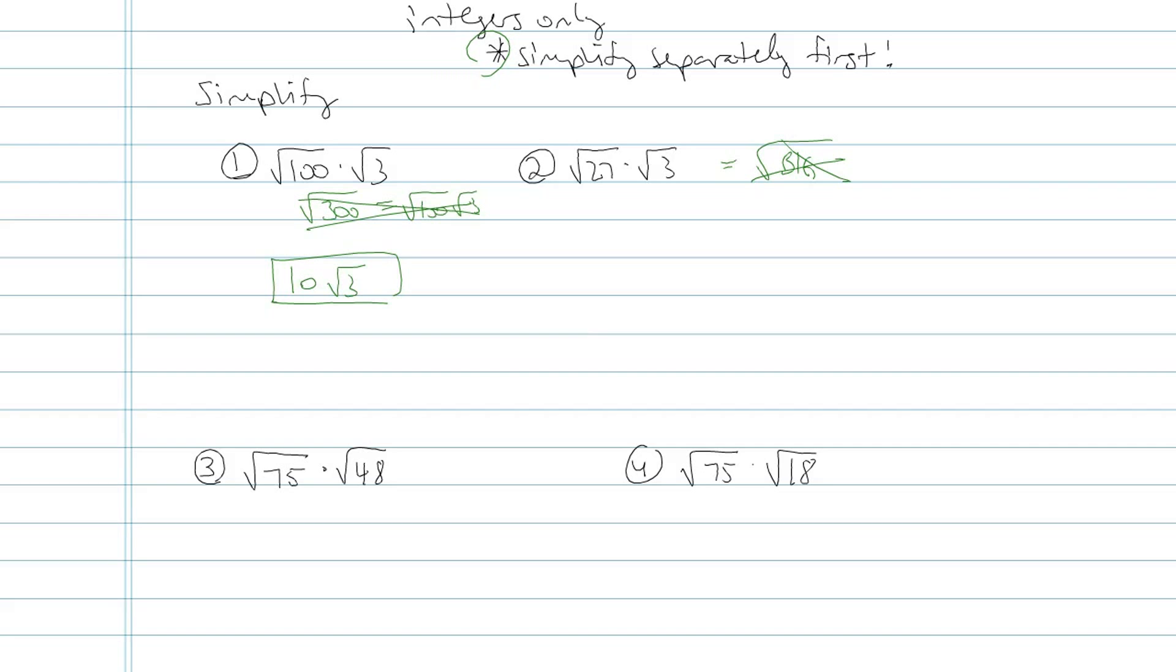What I'm going to do is simplify 27, or square root of 27, and simplify root 3 if possible. While simplifying square root of 27, I'm going to make that square root of 9 times square root of 3, and that's times square root of 3 again.